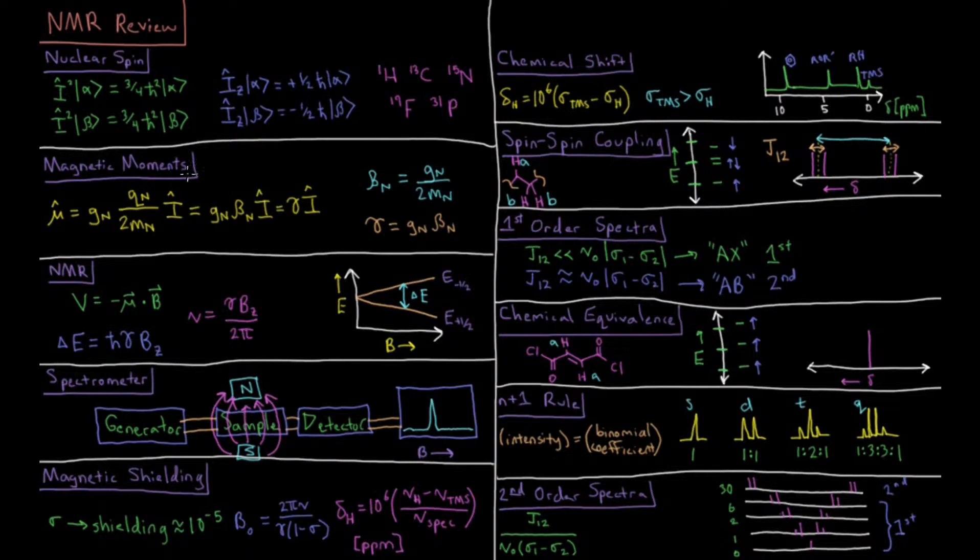We can define magnetic moments in terms of a factor which is nucleus-specific called the nuclear factor times the charge of the nucleus over two times its mass times our angular momentum operator, which equals that same value times now beta N defined as the Bohr magneton. And these values all together defined as the magneto-gyric ratio.